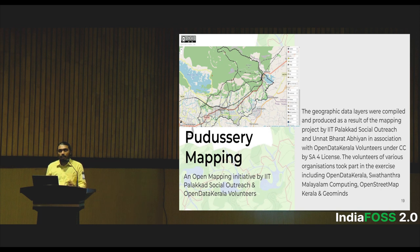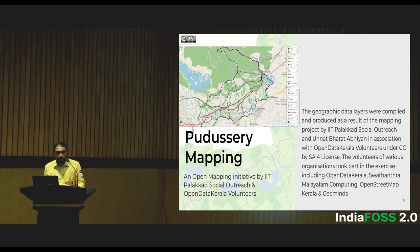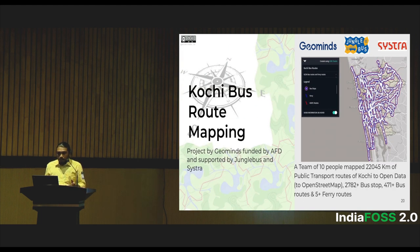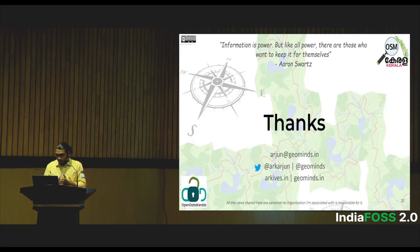Another aspect is collaborating with government authorities. If the data is not being used, updates won't happen. If there's no update, there's no point in keeping it open. Once data loses its validity, there's no point in having it. We conducted a project with IIT Palakkad, and another funded project in Kerala on bus mapping — mapping bus routes. That's all, my time is over.